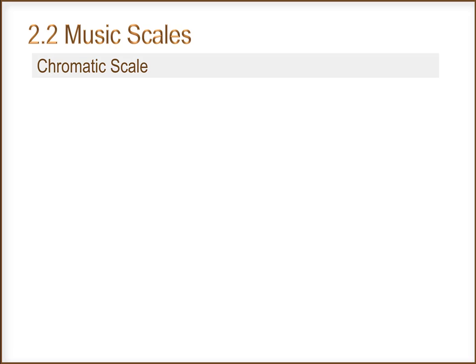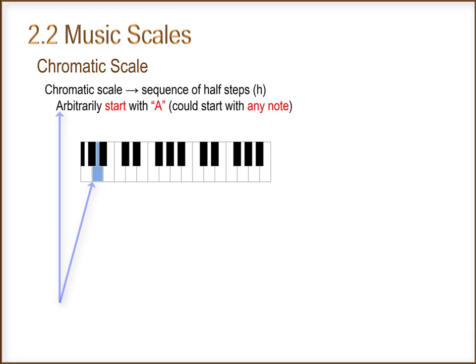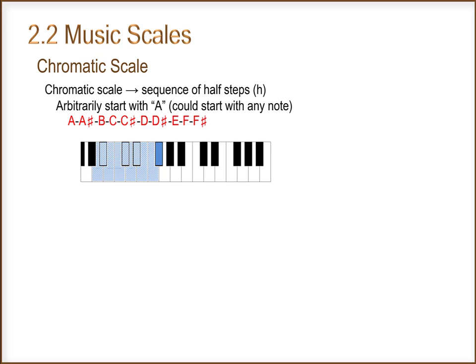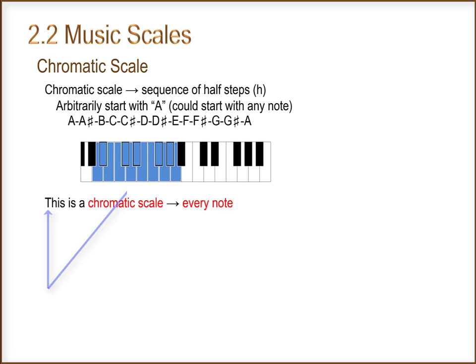What is a chromatic scale? A chromatic scale is a sequence of half steps. We'll arbitrarily start with A. It could start with any note. This is a chromatic scale. Every note.